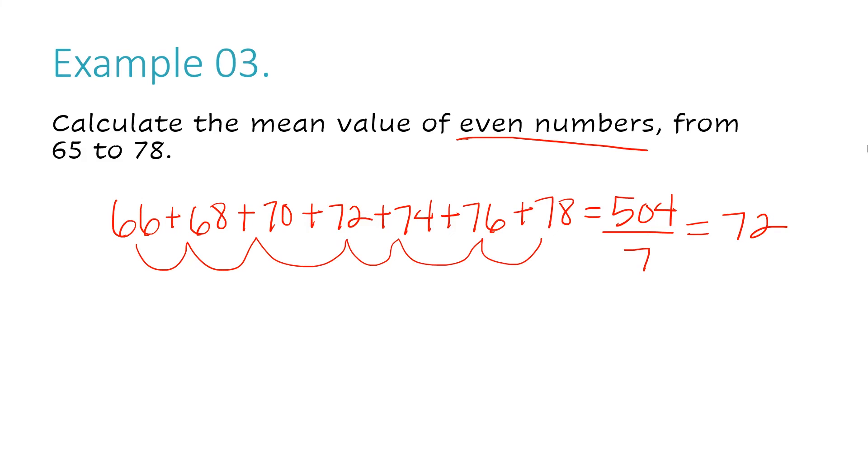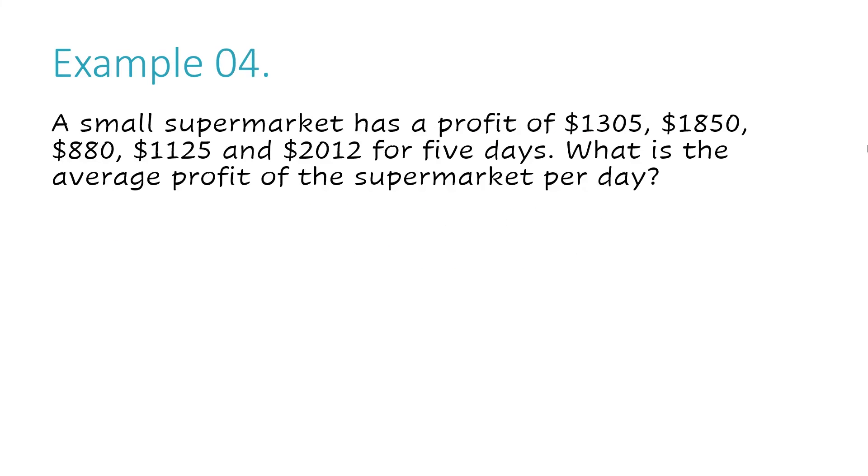Now let's move on to example number four. A small supermarket has a profit of $1,305, $1,850, $880, $1,125, and $2,012 for five days. What is the average profit of the supermarket per day?